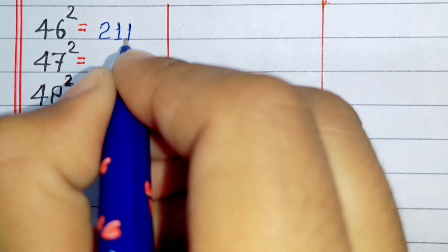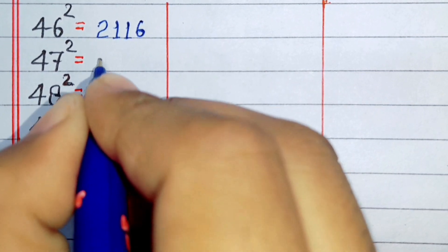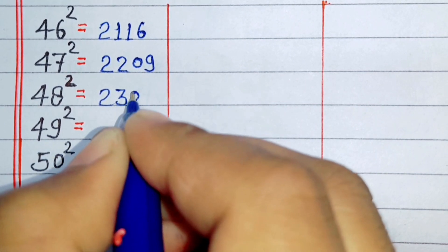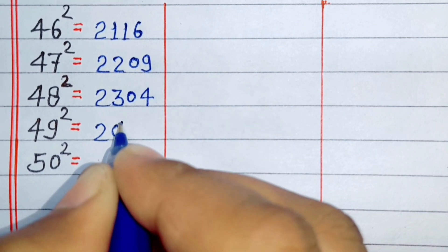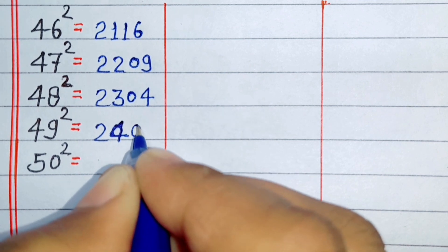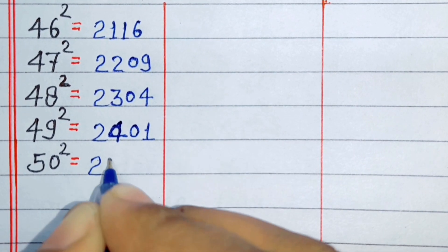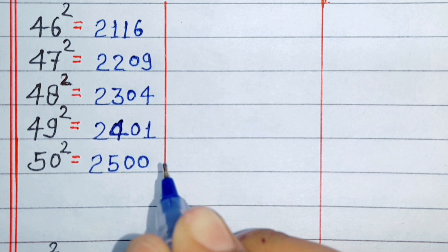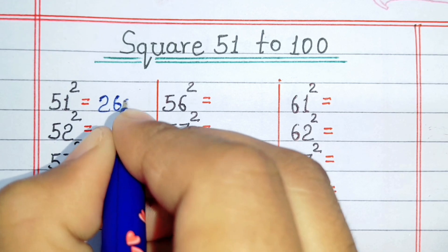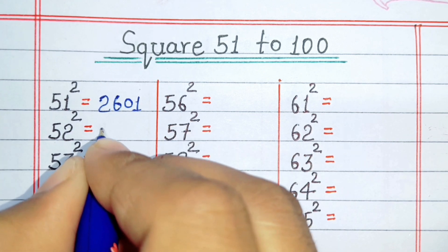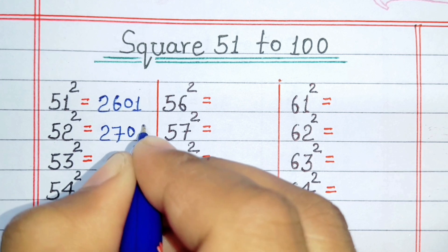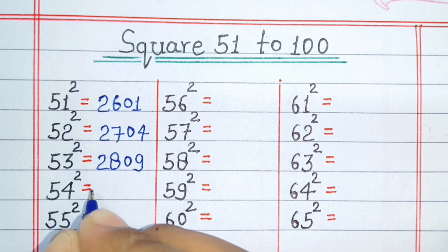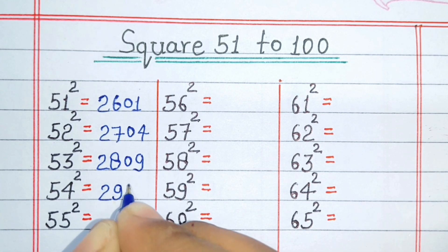Square of 46 is 2116. Square of 45 is 2116. Square of 47 is 2029. Square of 48 is 2304. Square of 54 is 2809.